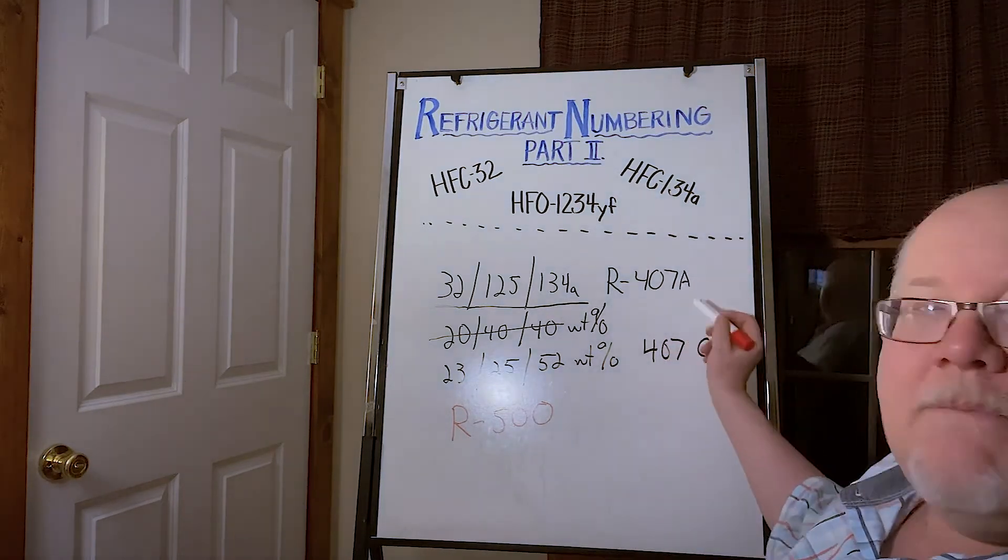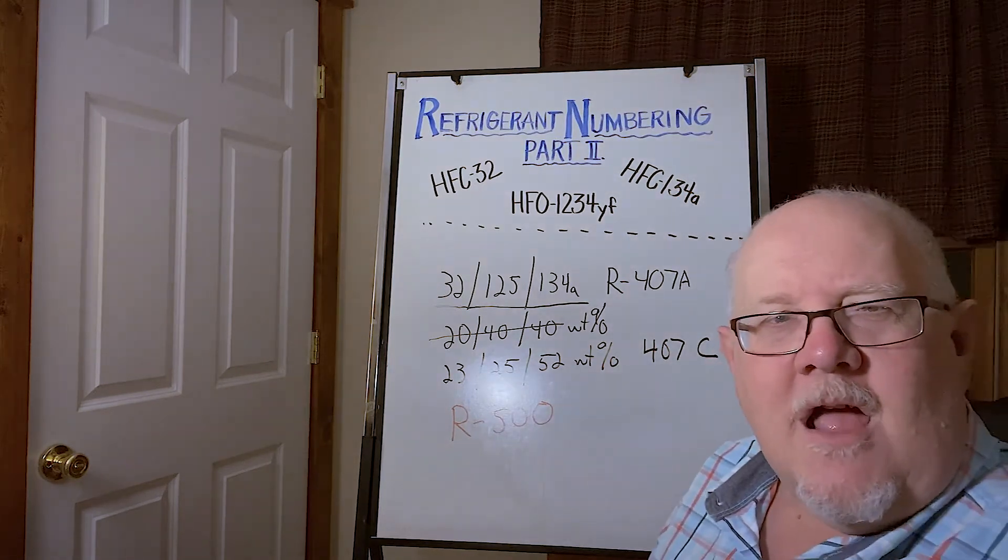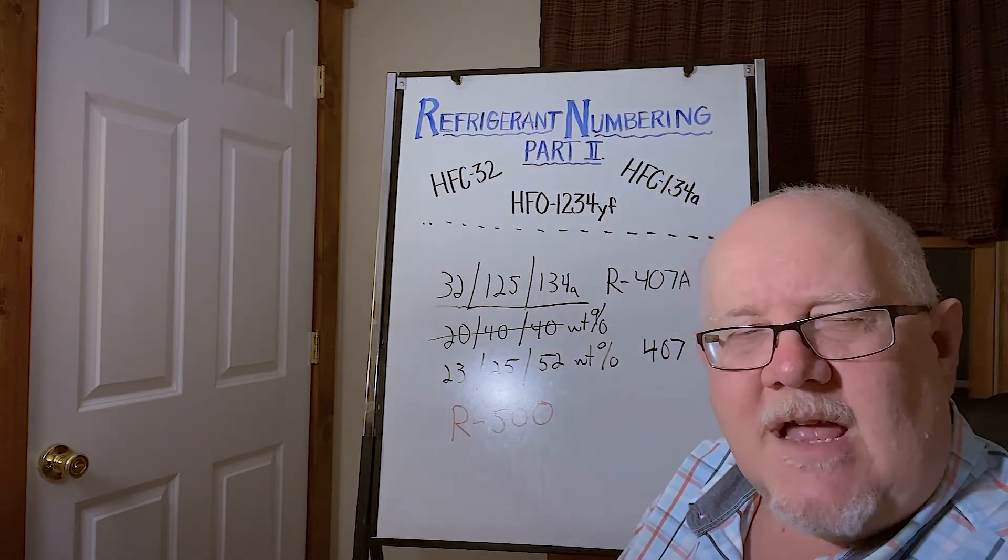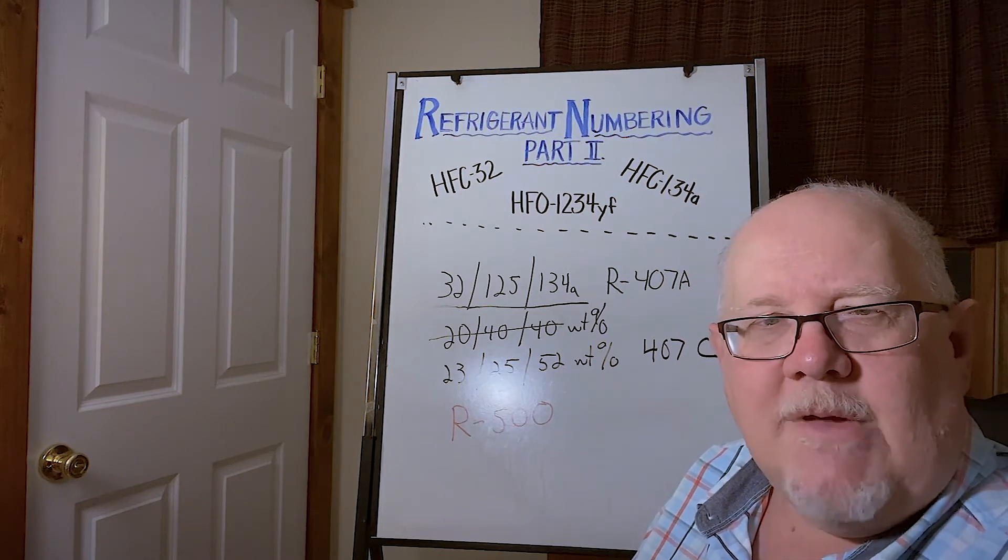And then if it's the same nominal components in different proportions or different composition, then it gets the A, B, C nomenclature. I hope that made some sense. I know there's a lot of refrigerants out there with a lot of numbers. It can be confusing.